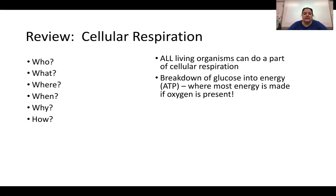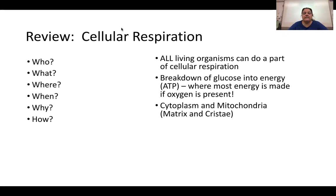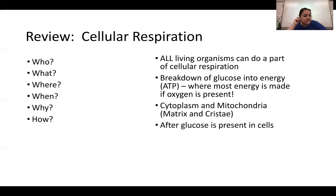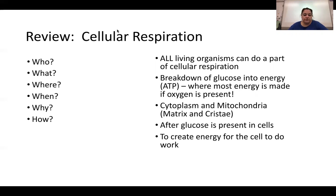What is cellular respiration? It is the breakdown of glucose into energy in the form of ATP. Most energy is made if oxygen is present. Where does it occur? In the cytoplasm and mitochondria — specifically in the matrix and cristae. When does it occur? After glucose is present in cells. Why? To create ATP so the cell can do work.